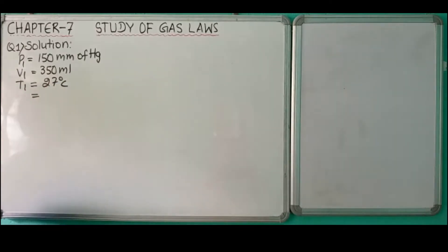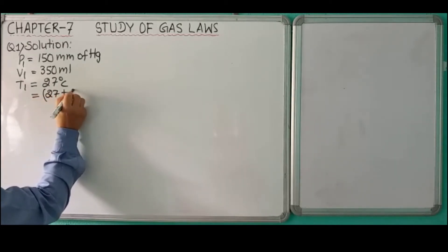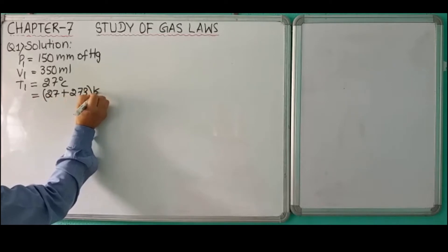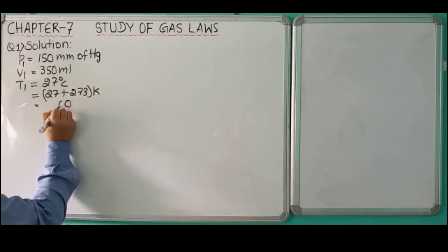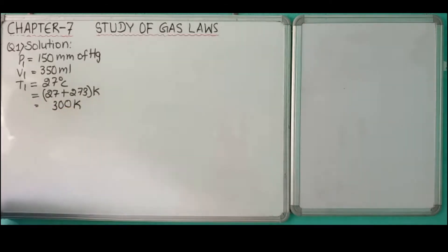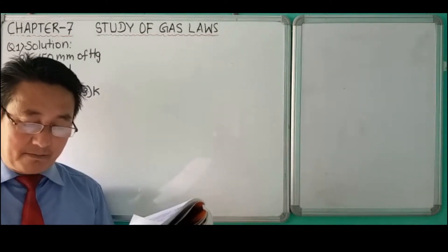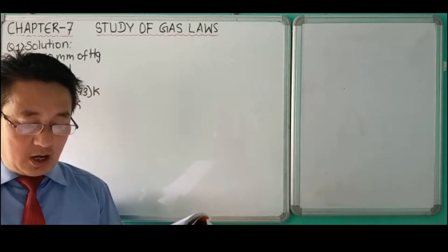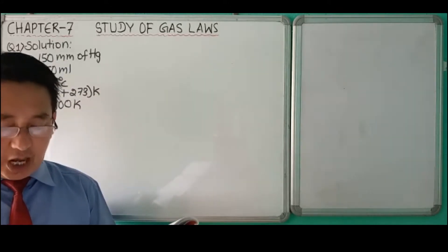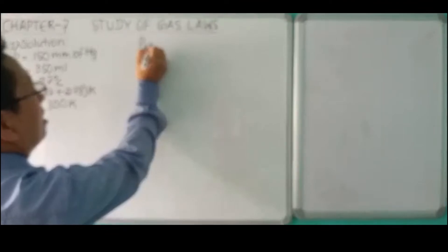27 plus 273 equals 300 Kelvin. If the volume of the gas at minus 173 degrees Celsius is 450 milliliter, what will be its pressure? Assume that the same mass of gas is taken. In this case we have to find out P2.